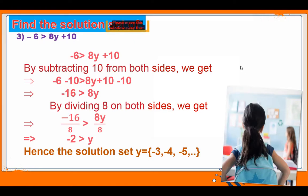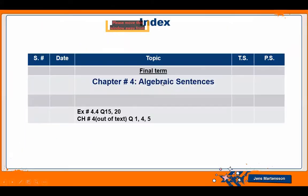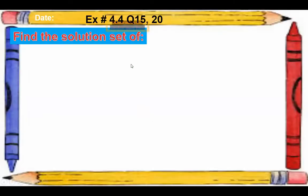Any questions up till now? Can we start question 15 and 20 together? So this is the index — mention the date properly, exercise 4.4, question 15 and 20. Find the solution set. The question is on your screen — start your work. I'm going to take your attendance.